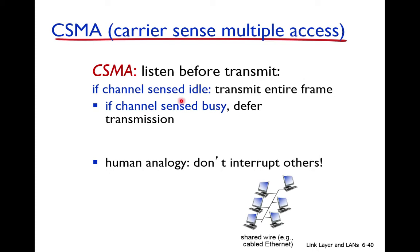If the channel is sensed idle, the node transmits the entire frame. Before transmitting, the node senses the medium. If the channel is busy — because another node is transmitting, so there is a signal on the link — this node finds the channel busy and defers its transmission. That is, it will not transmit the data and will wait for a certain time.